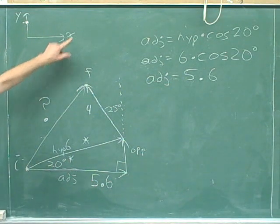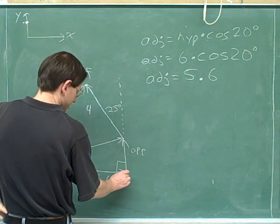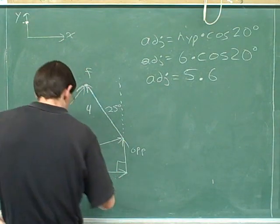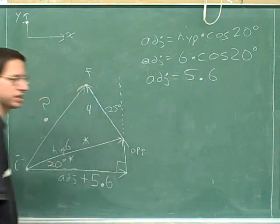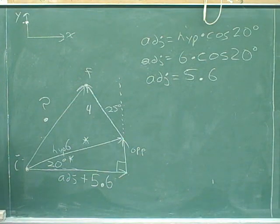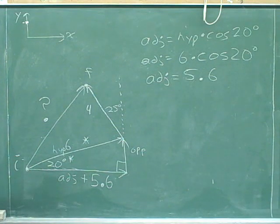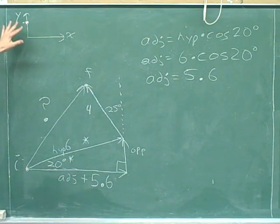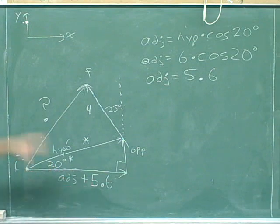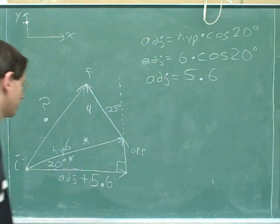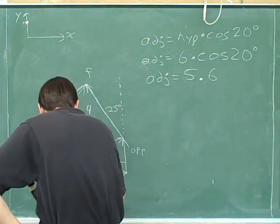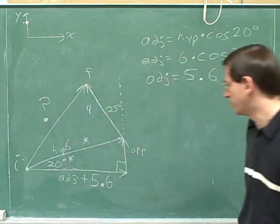We've chosen to the right as our positive direction, and this vector is pointing to the right, so that component comes out to be positive. You should always write down your positive directions. In this problem, I didn't give them to you, so you had to choose your own. I think it's simplest to choose up and to the right as positive. So the adjacent side here is positive 5.6.